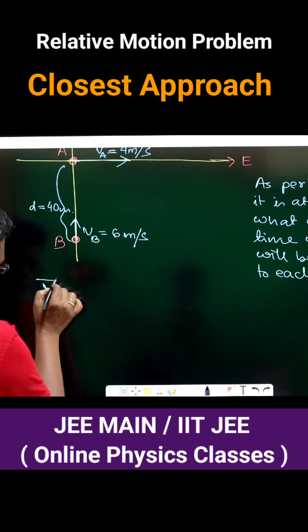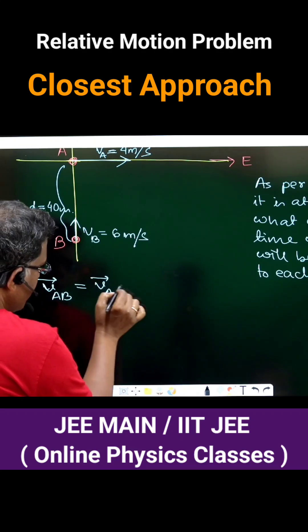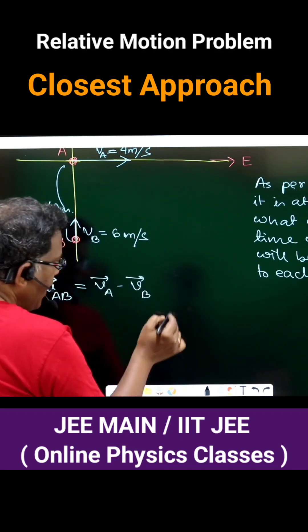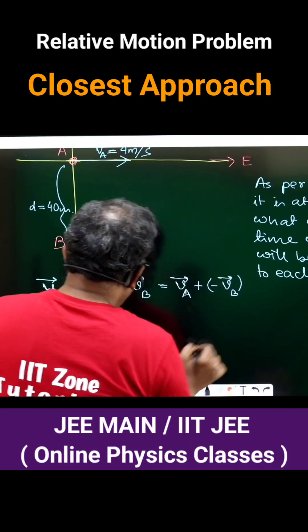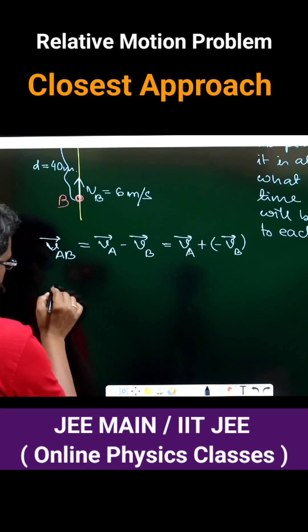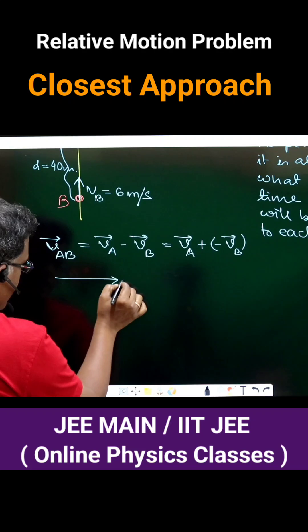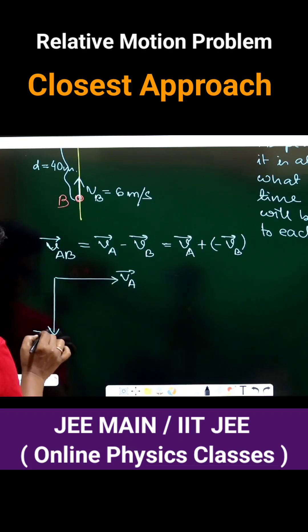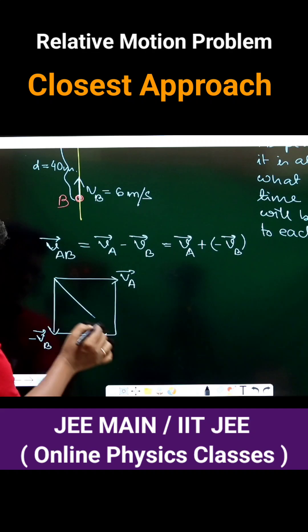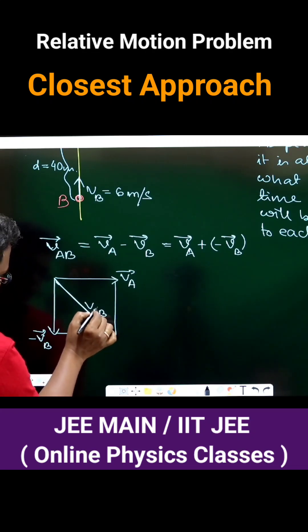Velocity of A relative to B will be velocity of A minus velocity of B, and that we can further rearrange as VA plus minus VB. As per the diagram, VA going this way, minus VB can be taken this way. So the relative vector comes like this. This will be the VAB vector.